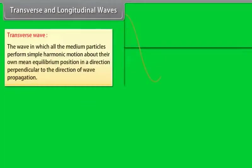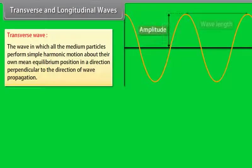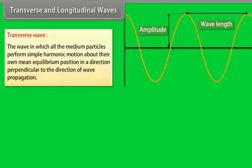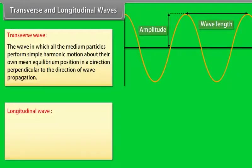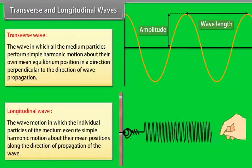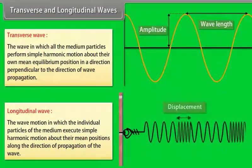Transverse and longitudinal waves: A transverse wave is one in which all the medium particles perform simple harmonic motion about their own mean equilibrium position in a direction perpendicular to the direction of wave propagation. Longitudinal wave motion is that wave motion in which the individual particles of the medium execute simple harmonic motion about their mean positions along the direction of propagation of the wave.